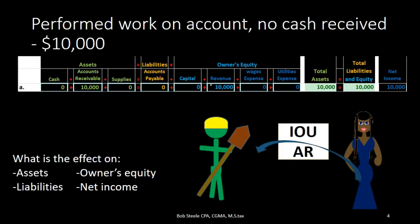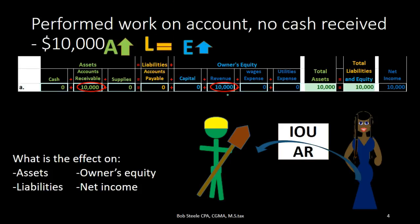Accounts receivable is going to go up by $10,000, bringing the assets up. The other side is revenue, which brings up the equity side. Liabilities remain the same, so our accounting equation is still in balance — the left side goes up with assets increasing via the receivable, and the right side goes up with equity increasing via revenue. Also note that net income is going up as well, because revenue minus expenses equals net income, and that is increasing by that same $10,000.